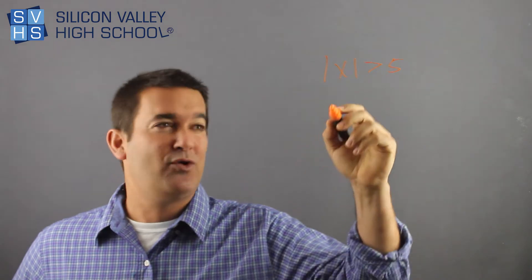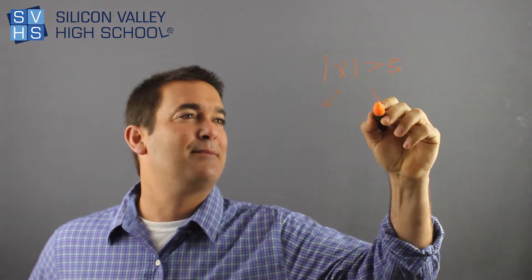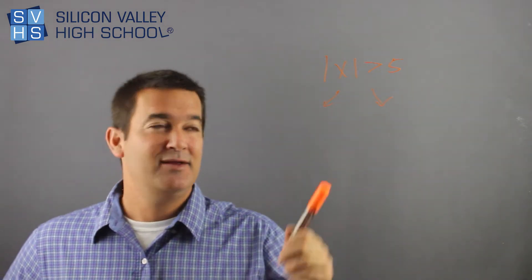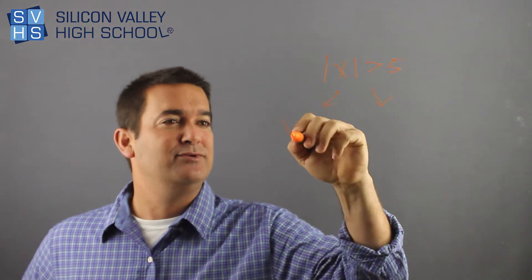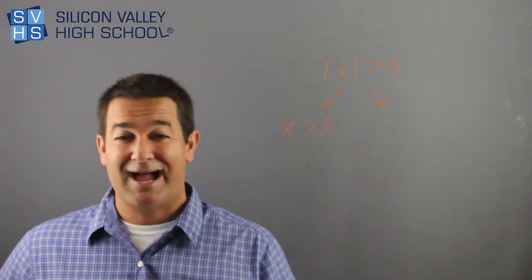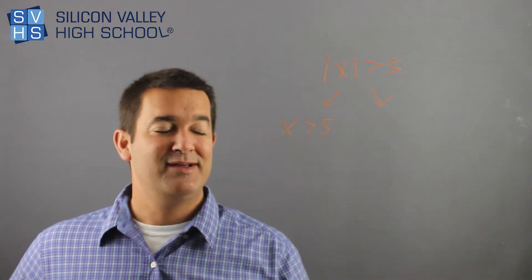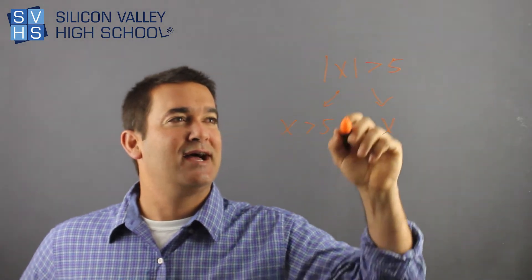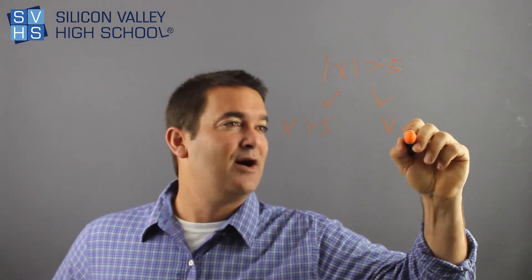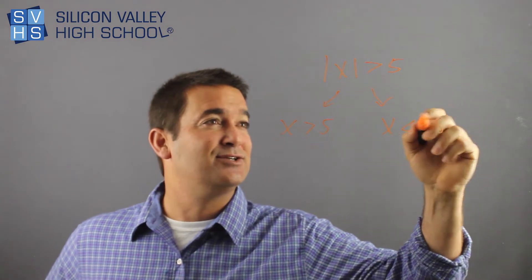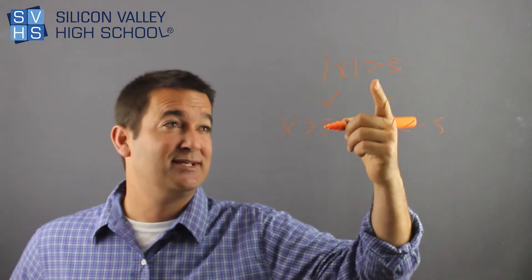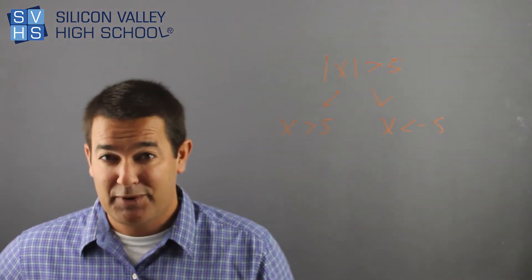All you do when you have an absolute value inequality is write two separate problems before you even start. You take the original and don't change it at all - it's exactly the same. X is greater than 5. Then the one on the other side, you flip the sign, so now it's less than. And you change the sign here. If that was a negative, it would go to positive. But since it's a positive, it goes to negative. So two problems.